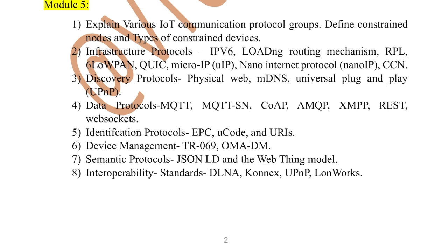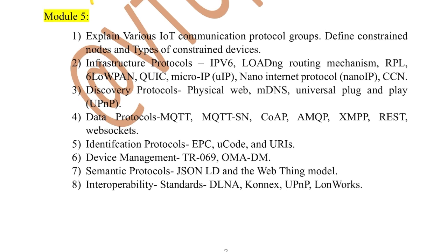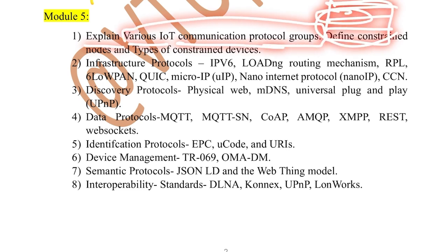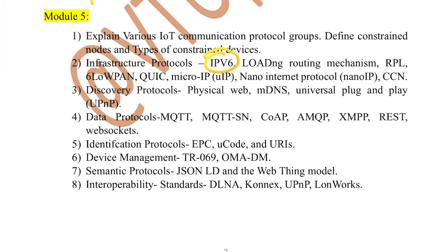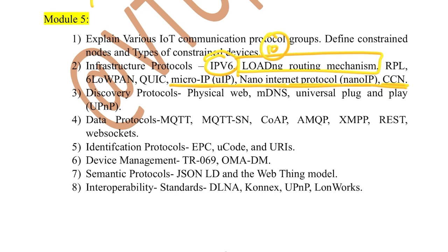Moving on to the fifth module — it has a large set of topics and two different chapters. First, explain various IoT communication protocol groups: there are five protocol groups in a diagram. Then define constrained nodes, types of constrained devices, and constrained networks — a theory topic that could be asked for 10 marks. Under infrastructure protocols, IPv6 and IPv4 are very important. Next, the Low-power and Lossy Network routing mechanism (RPL) — this was asked for 10 marks in an internal. Then micro IP, nano internet protocol, and CCN are important tiny topics that together could be asked for 10 marks, along with RPL and LoWPAN.